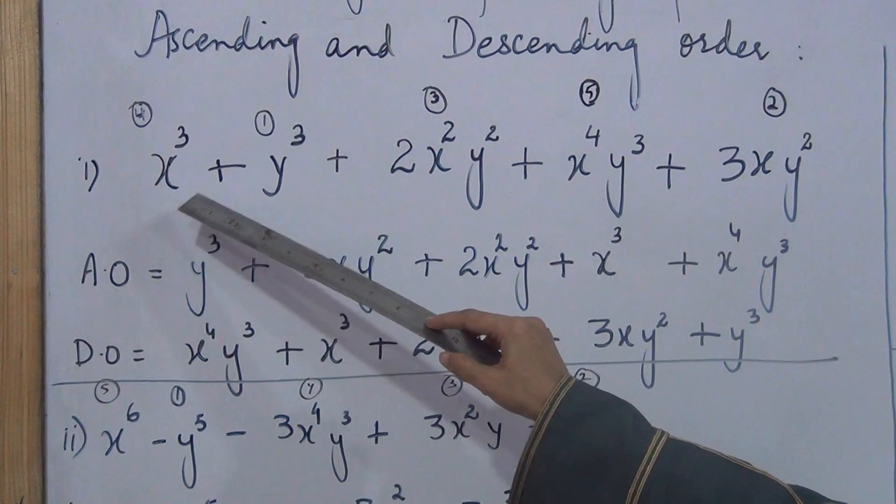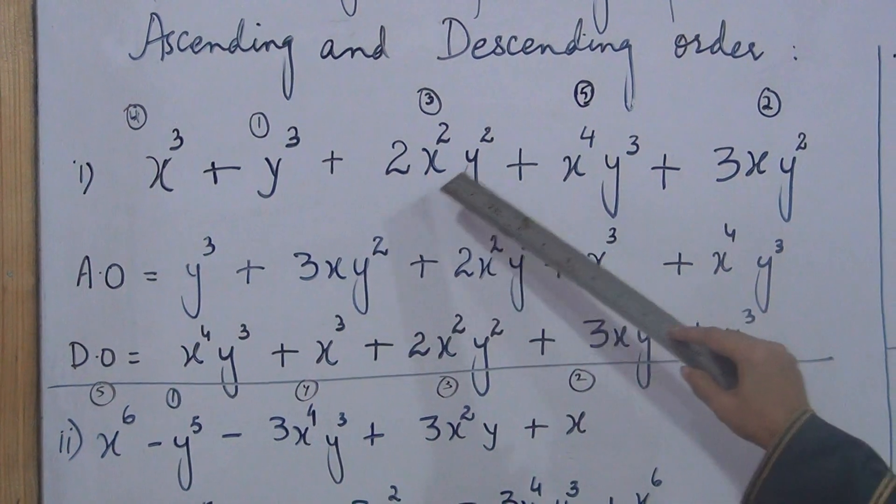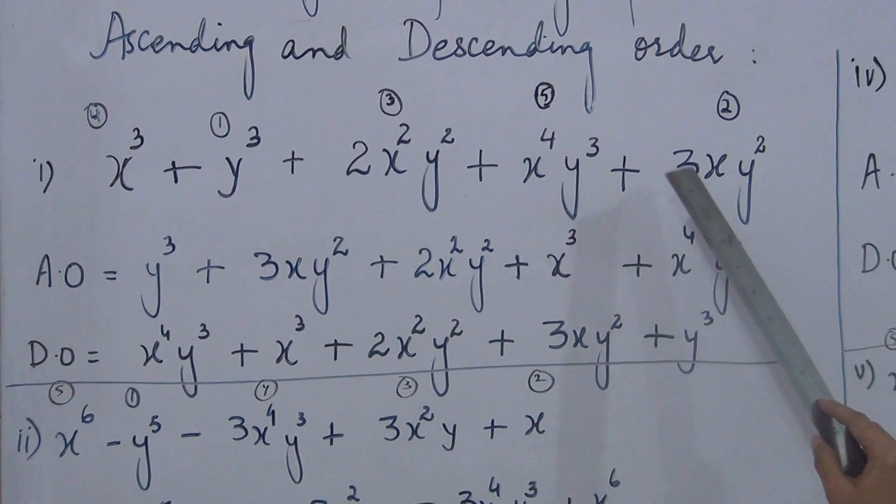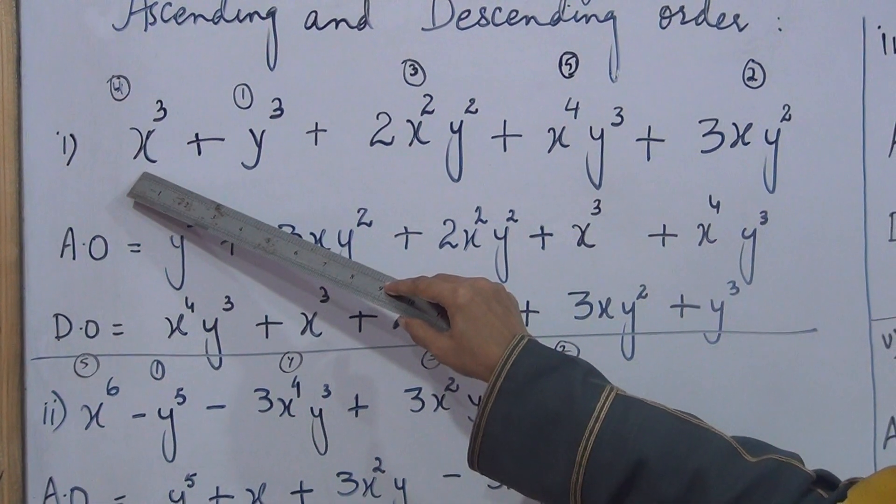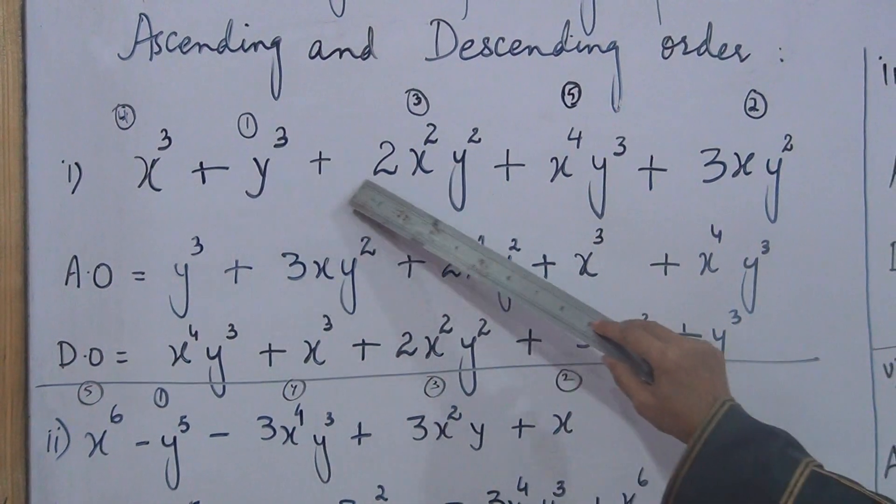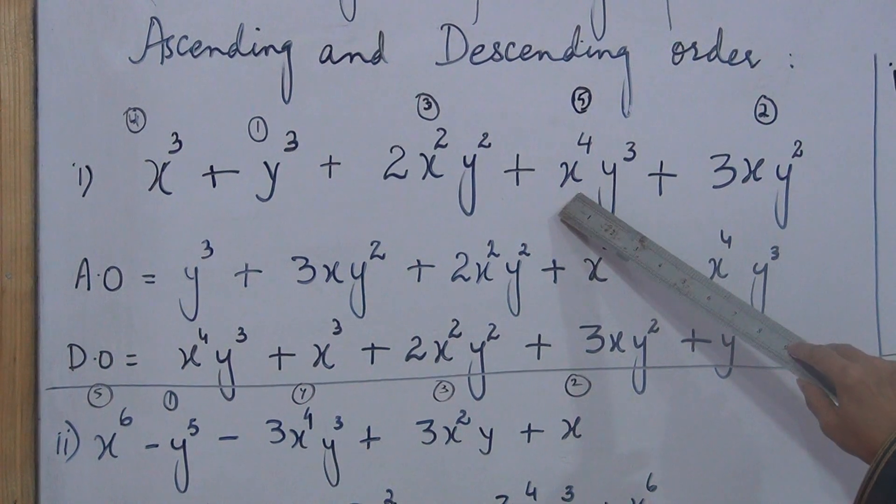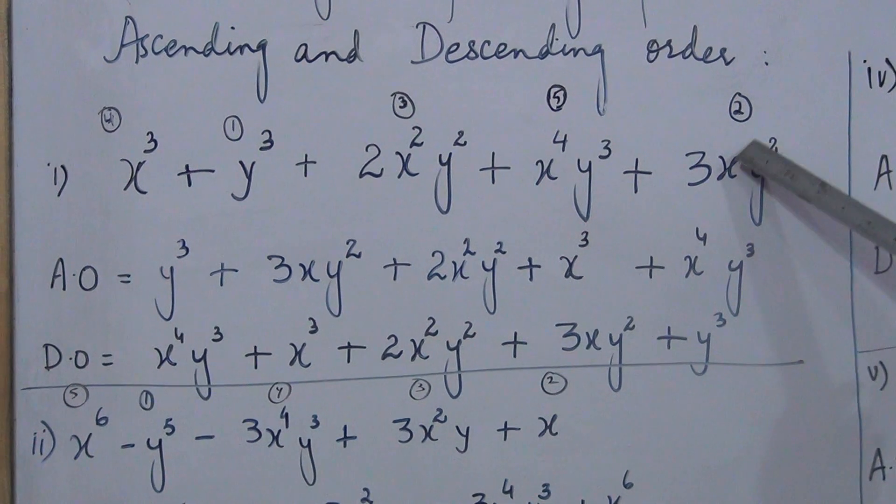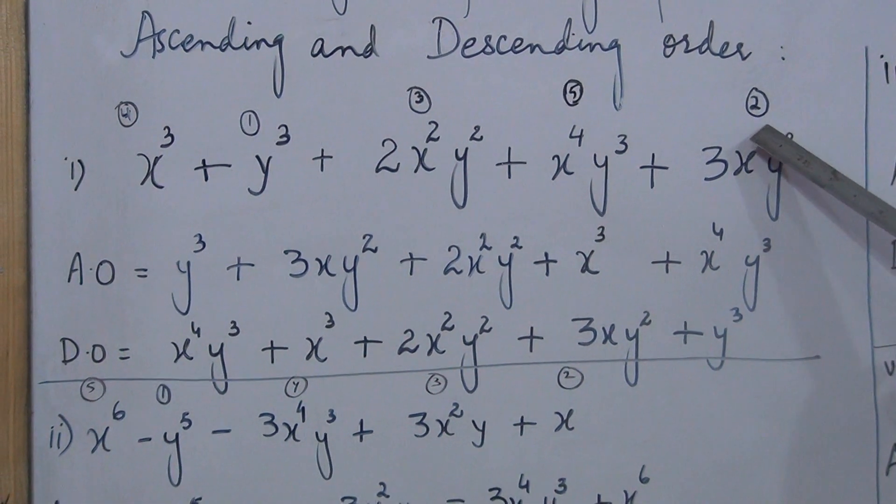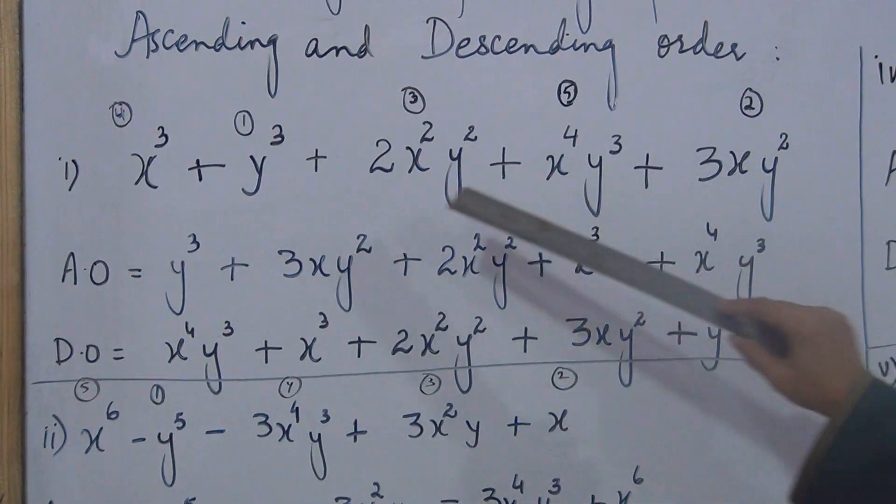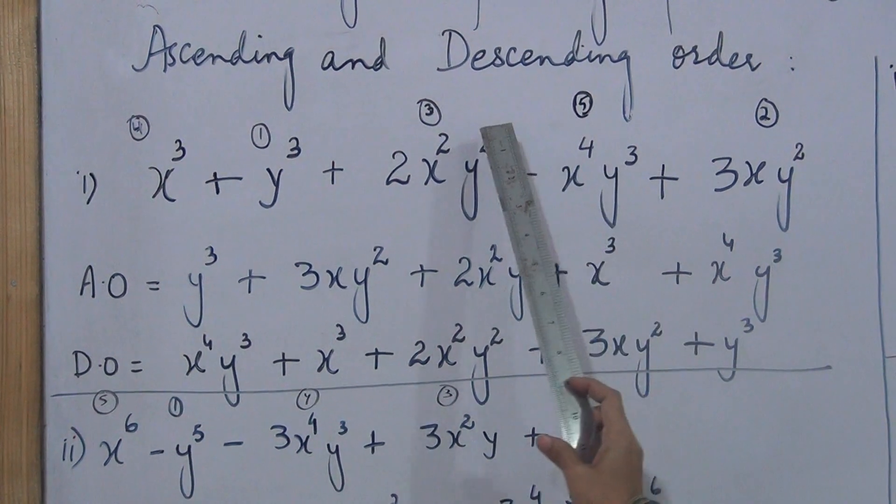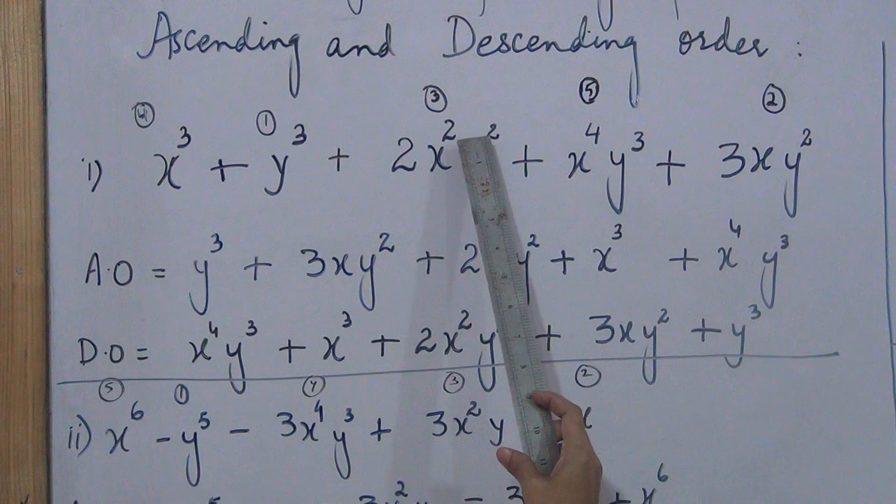Now look at the expression. In this expression there are one, two, three, four, five terms. In the first term, what is x's power? Three. In the second term, there is no x, so x's power is zero. Here x's power is two. Here x's power is four. Here x's power is one invisible. Where the variable is written and power is not mentioned, there is an invisible one power. Where the variable is missing, the power is zero. We will ignore y's power and just check the arrangement for x.